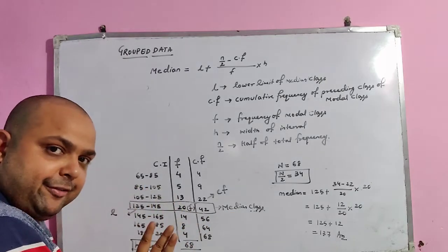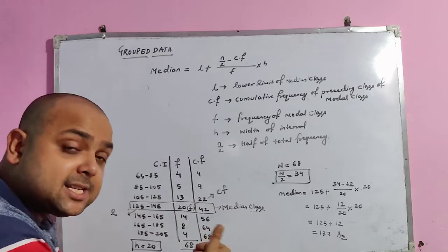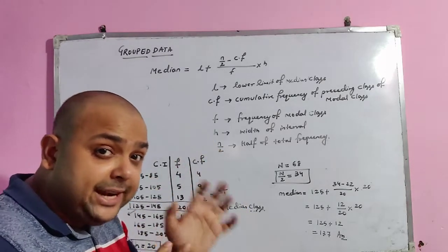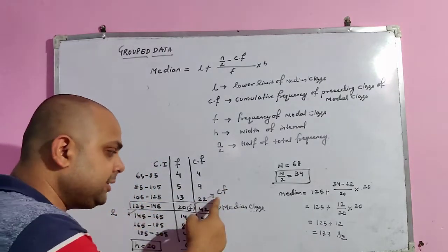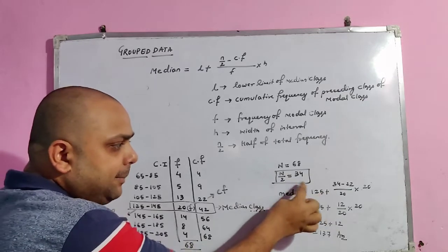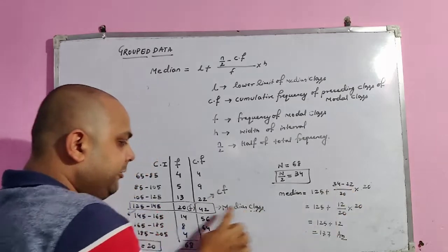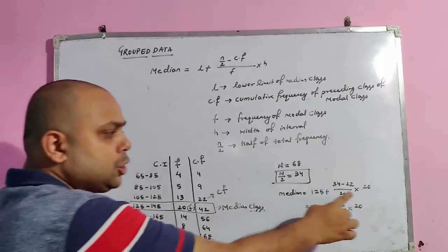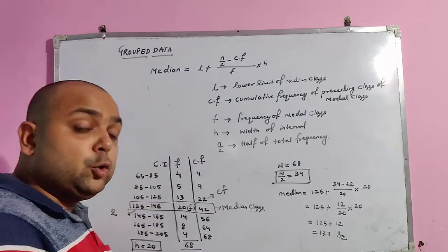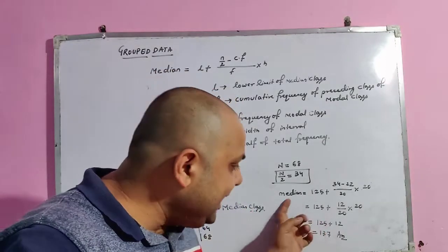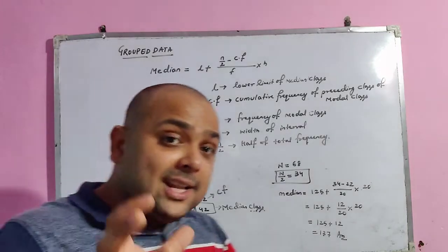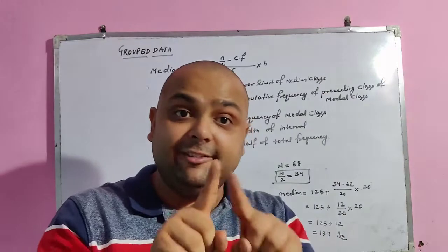In the median class row, the lower limit l = 125. The frequency of the median class is f = 20. For cf, we take the cumulative frequency of the preceding class (not the median class itself), which is 22. Now we apply the formula: Median = 125 + (34 − 22)/20 × 20. The 20s cancel, 34−22 = 12, giving Median = 125 + 12 = 137.